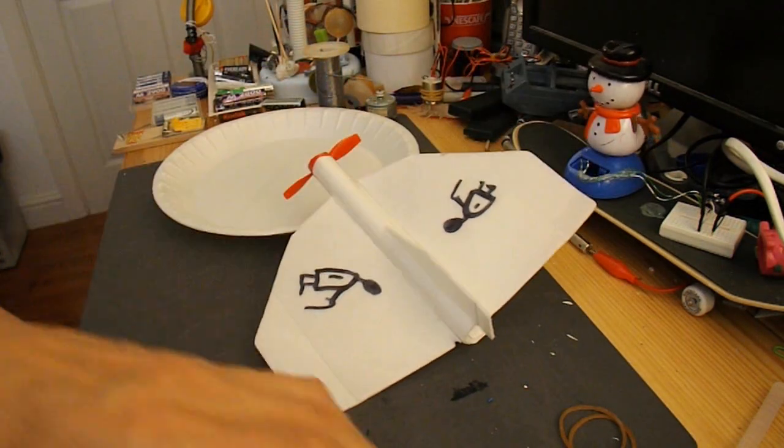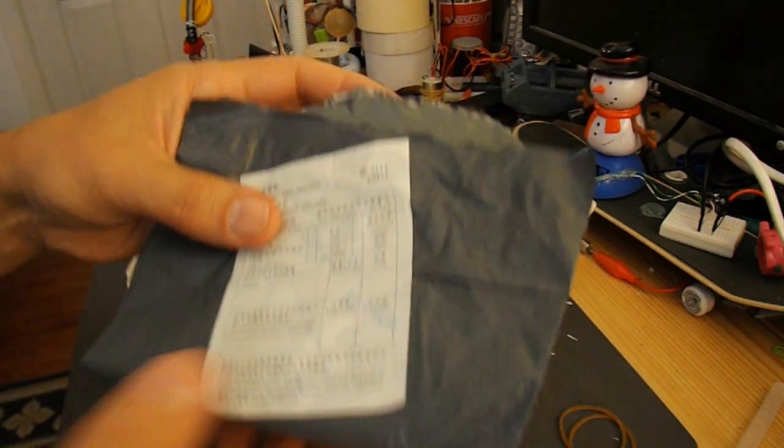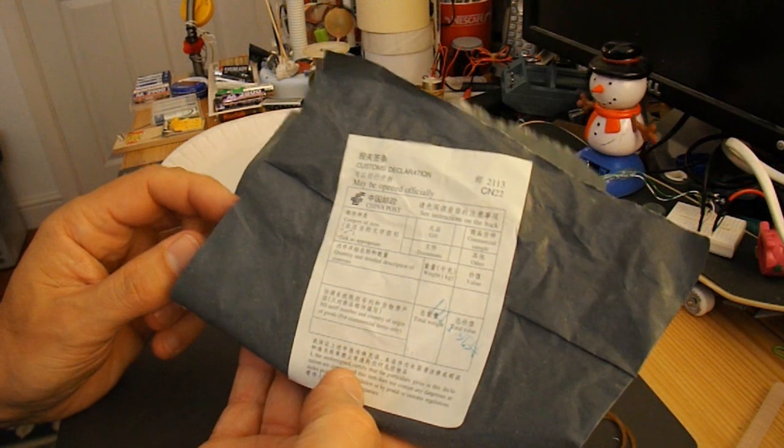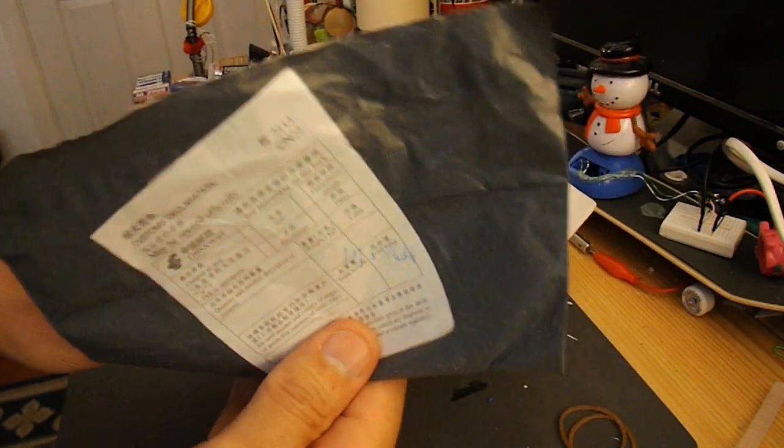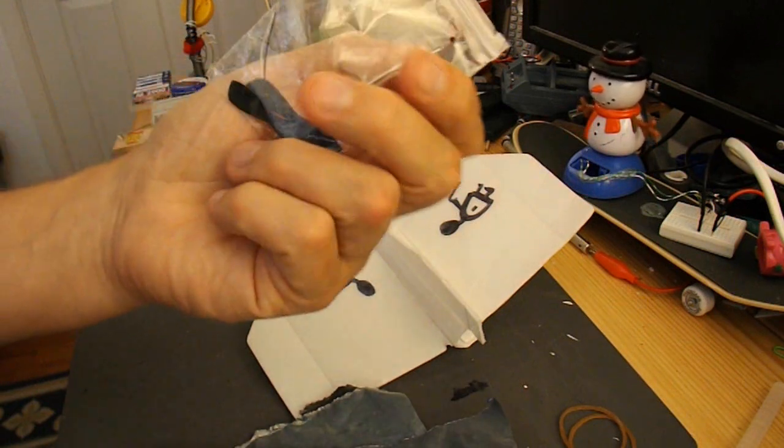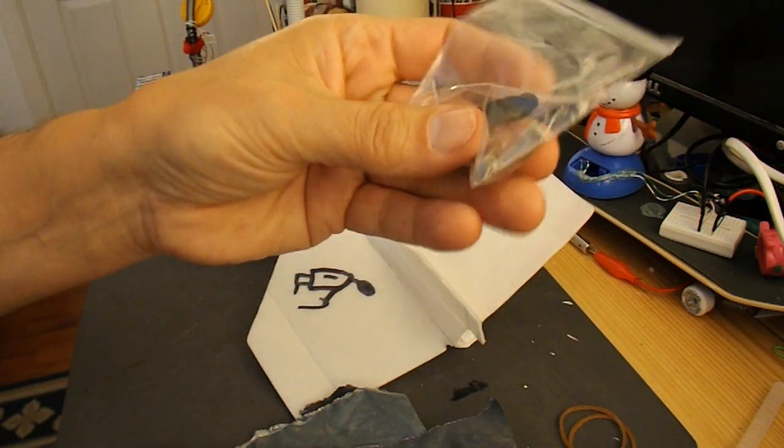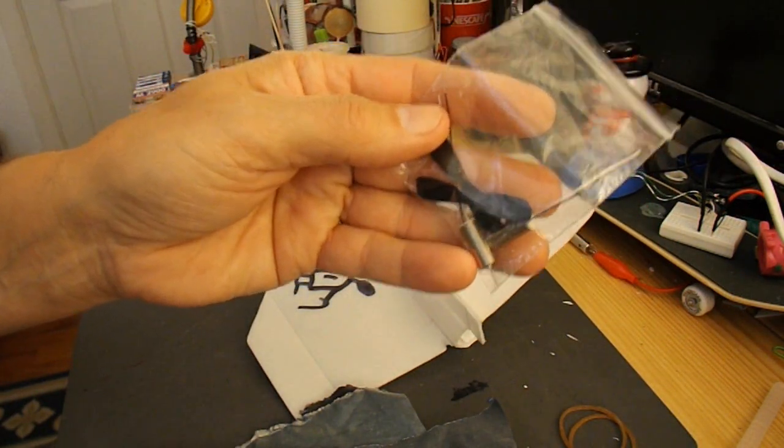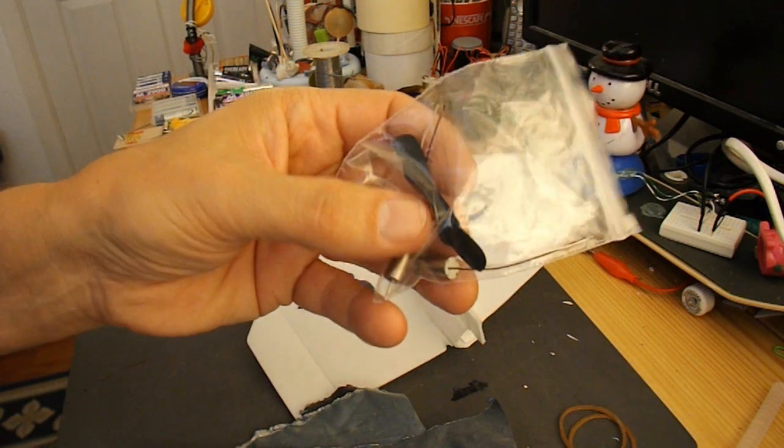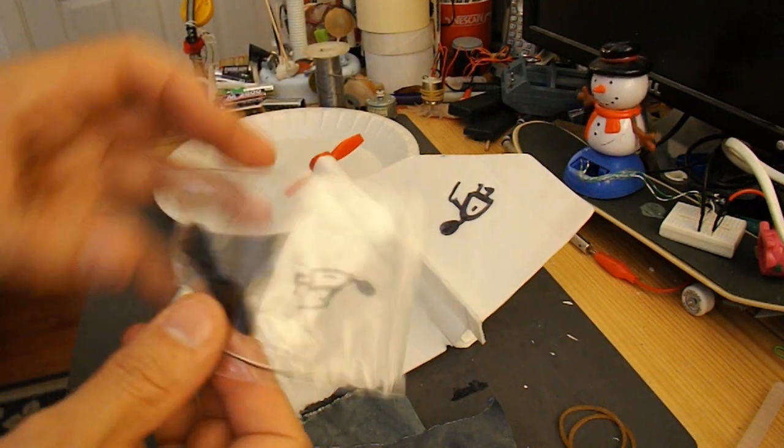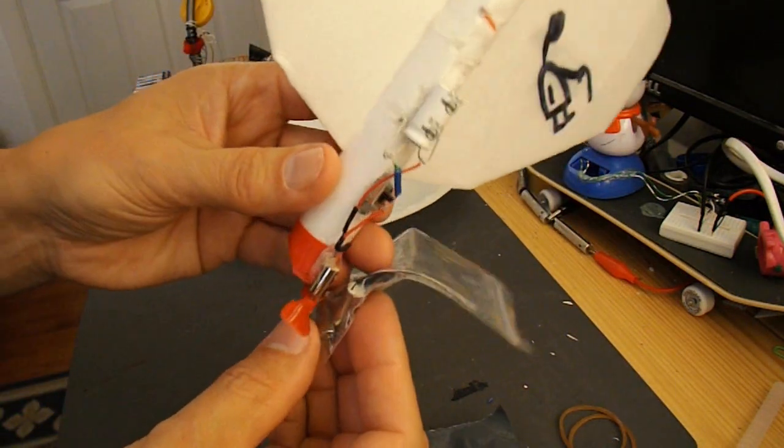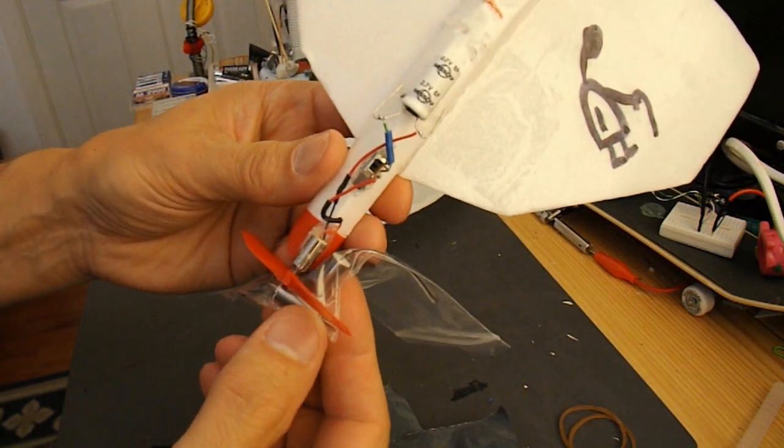Well, a while back I actually ordered some cheap motors from eBay, from China, and they've arrived today. What caught my eye was they actually came with propellers. So, hopefully, they are matched propellers for the motors. They're slightly bigger motors anyway, than the ones that I've got, so they should be more powerful.